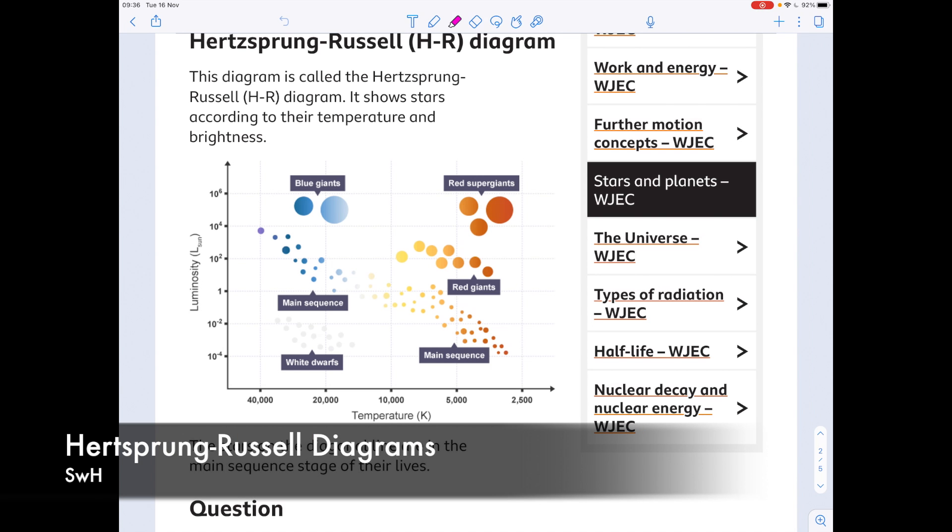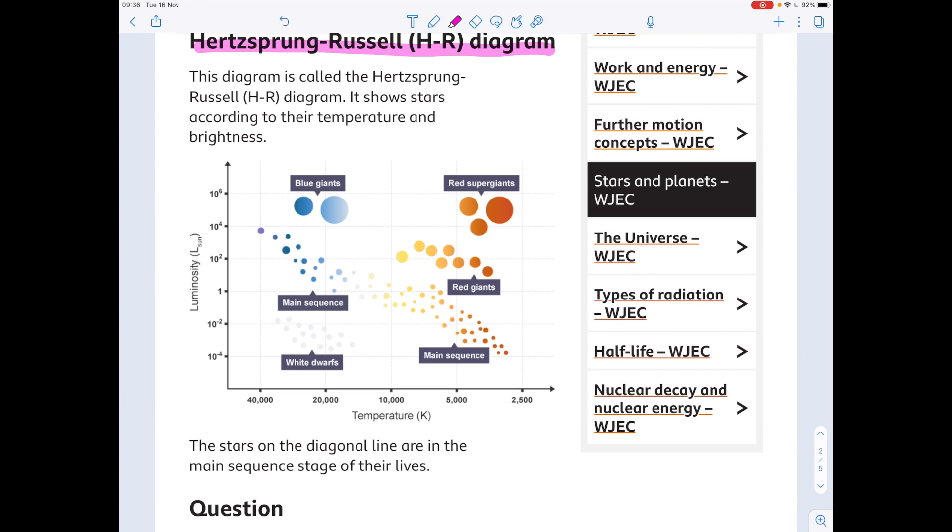This is an IGCSE and GCSE physics video on Hertzsprung-Russell diagrams. I'm just going to quickly run you through what they show you before I take you through some past paper questions so you can really get to grips with this difficult topic. As you can see, this is a diagram. It's known as the Hertzsprung-Russell diagram and it crucially shows stars according to their temperature and brightness.